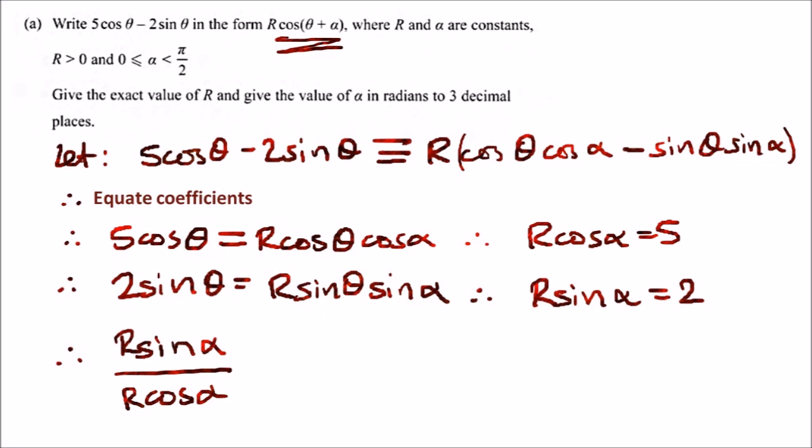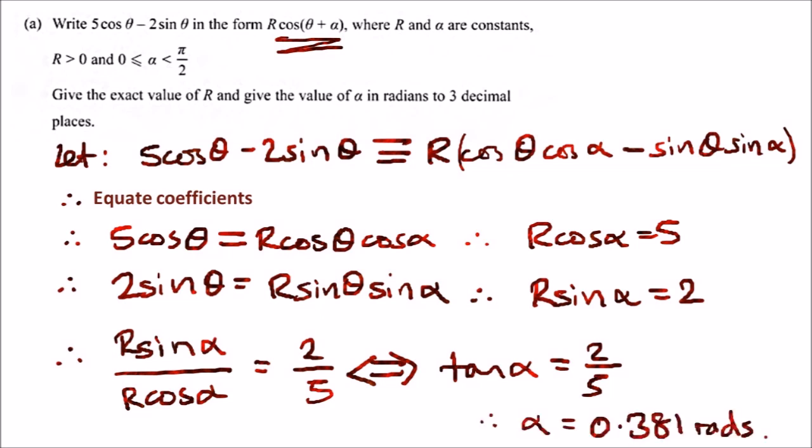This is of course equal to 2 over 5 from both equations. All we have to do simply is now make sure you're calculating radians and simply tan inverse 2 over 5, and that should give you 0.381 radians. That's it for alpha.